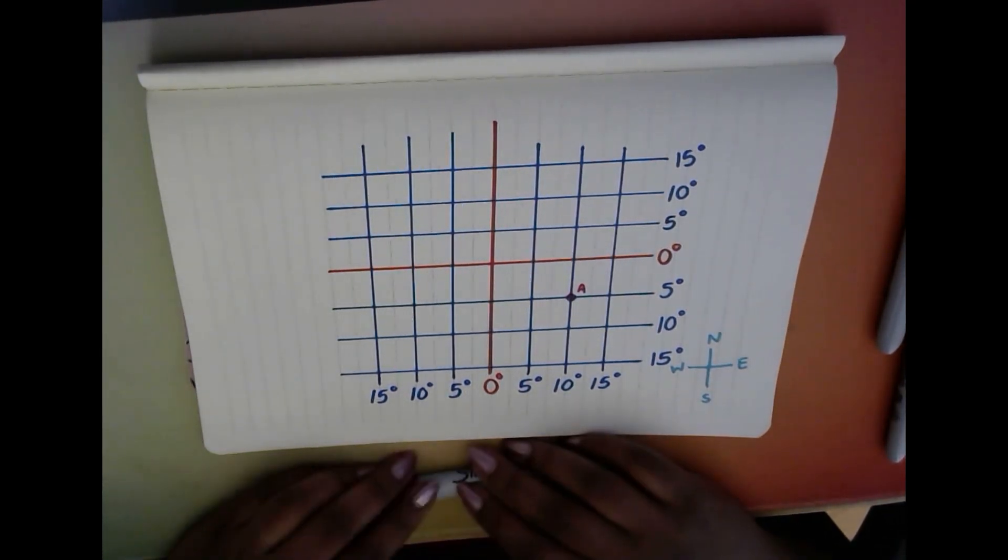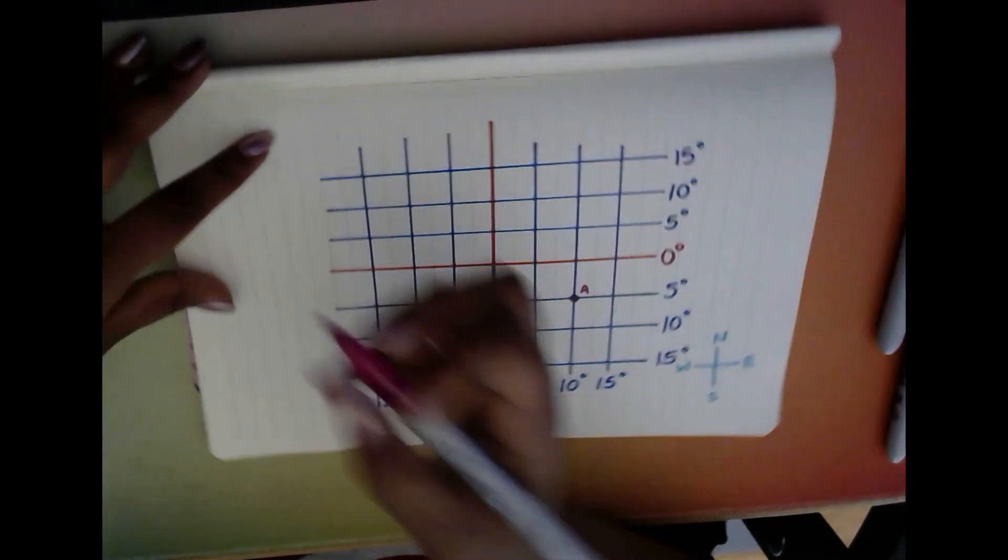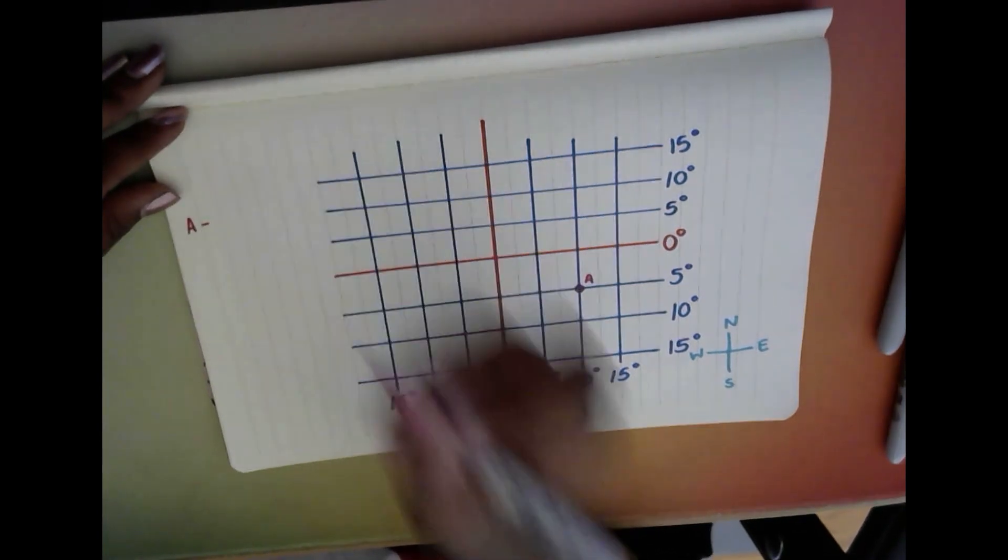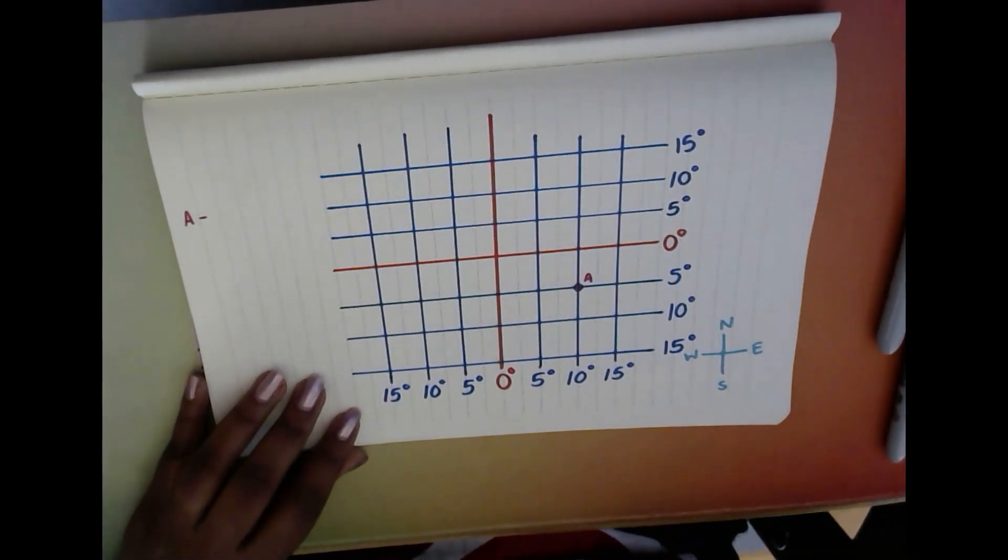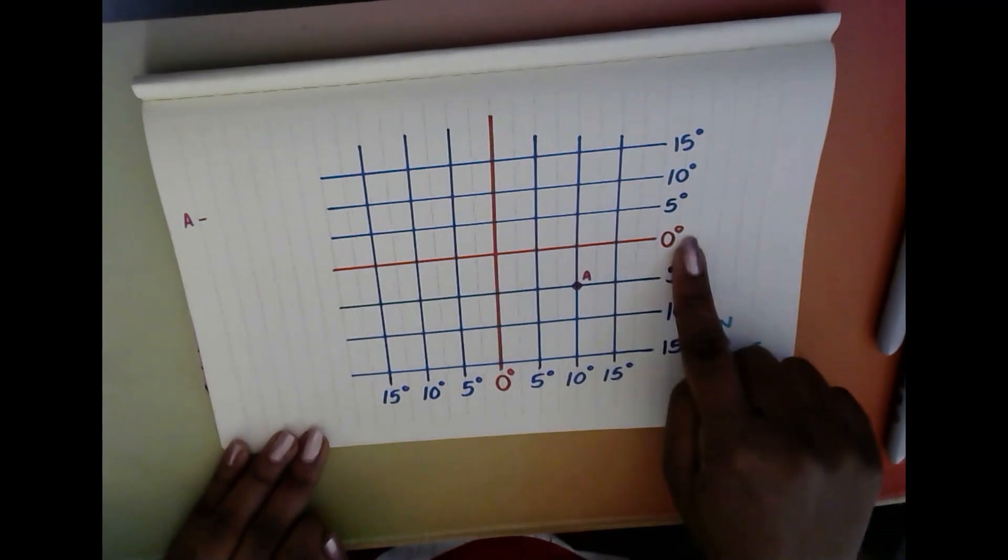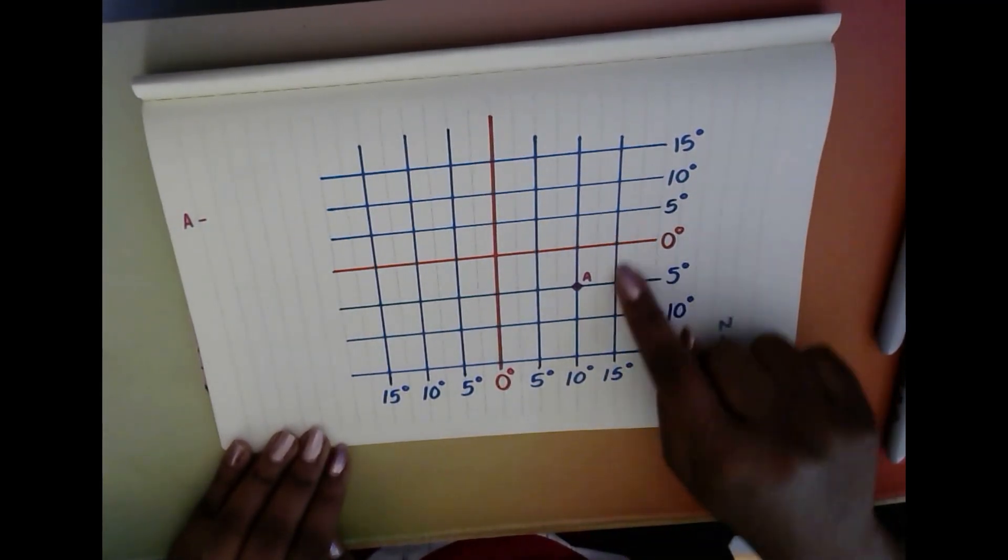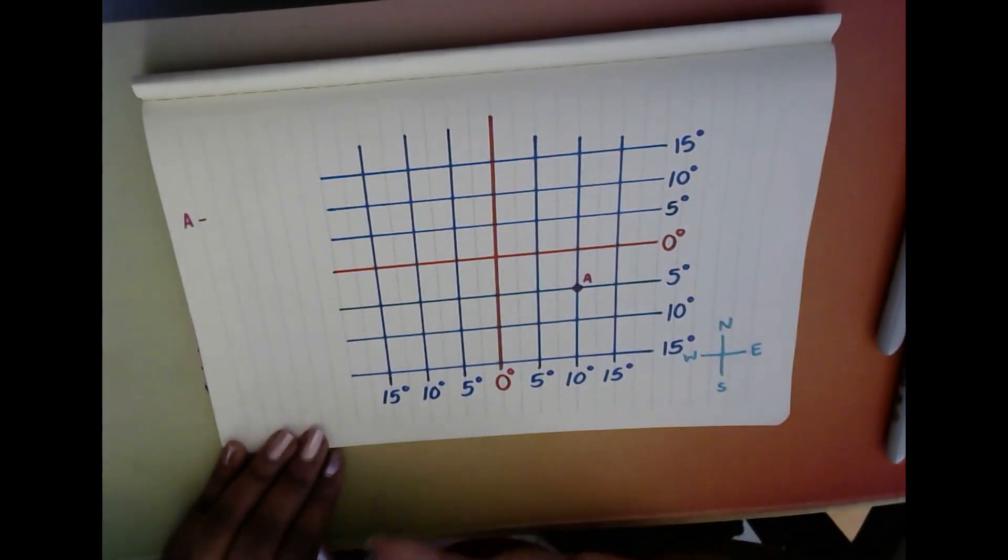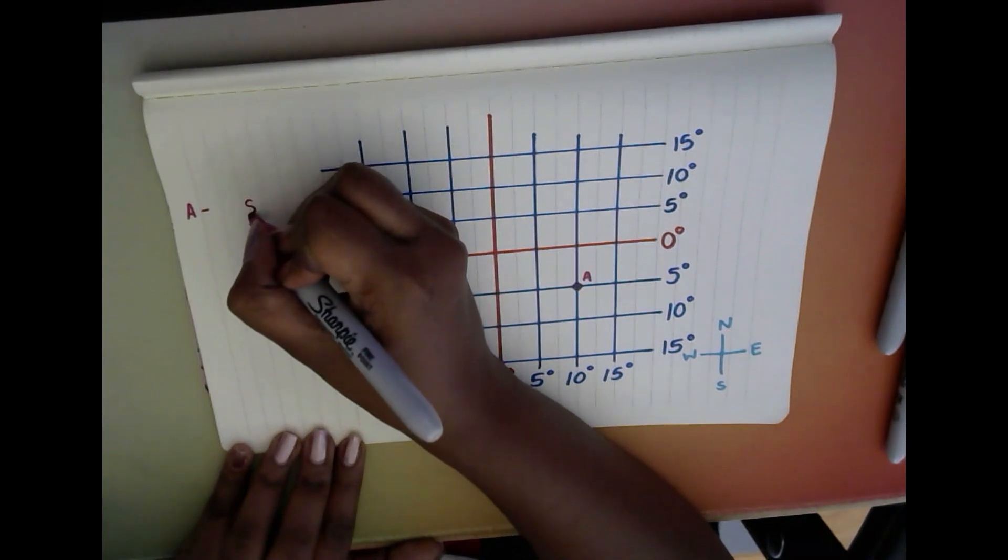The first thing we're going to do besides writing A is we are going to figure out which two hemispheres A is in. So the first thing we look at is our equator and we ask ourselves: is it in the north or the south? Now A is below the equator, so it must be south. So I'm going to leave a little space open and I'm going to write south.